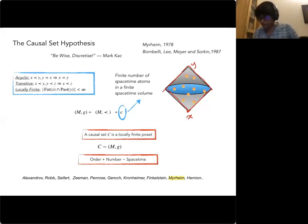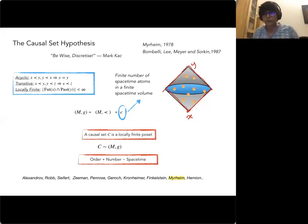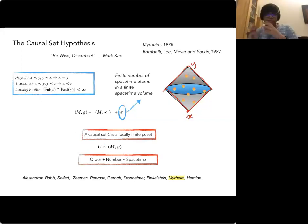The slogan is: order plus number equals spacetime. Order corresponds to the causal structure; number corresponds to volume. In an approximate sense, together they give you back spacetime.